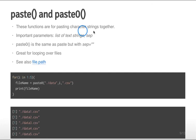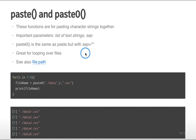The paste and paste0 functions concatenate character strings together. paste0 is the same as paste but with no separator between strings, which is useful when creating file names. These are great when looping over files. You might also see file.path as a way to identify paths for files you're looping over.